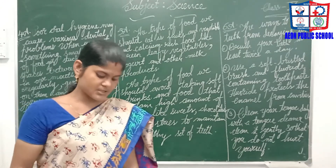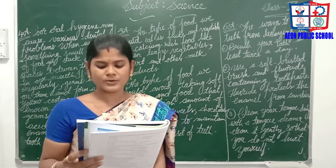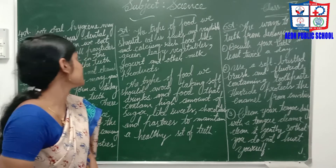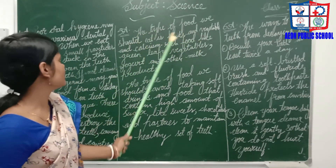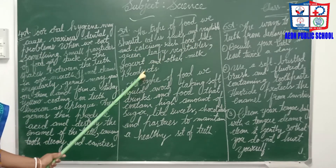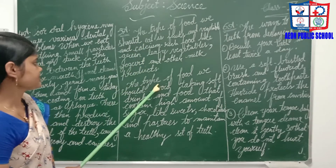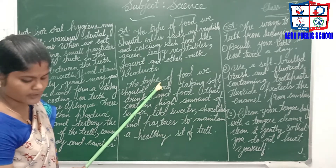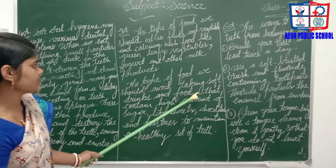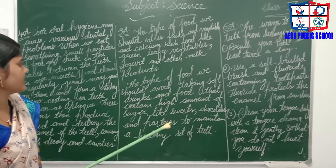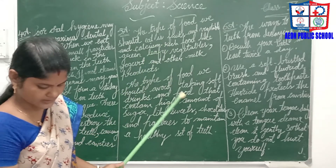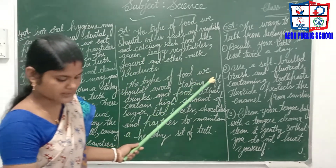Fifth question: mention the type of food you should take and food you should avoid to maintain a healthy set of teeth. We should eat fruits, vegetables, and calcium-rich food like green leafy vegetables, yogurt, and other dairy products. The food we should avoid includes soft drinks and food that contains a high amount of sugar like sweets, chocolates, and pastries.